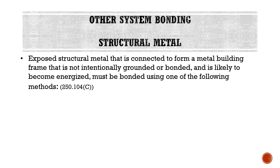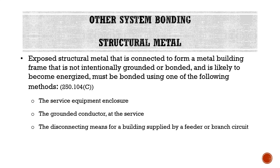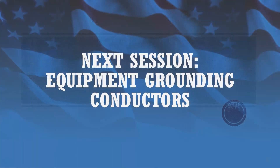Regarding structural metal: exposed structural metal connected to form a metal building frame that is not intentionally grounded or bonded and is likely to become energized must be bonded. We can use structural steel as a grounding electrode, but if for whatever reason we don't, we still have to bond it. Bonding methods include: the service equipment enclosure, the grounded conductor at the service, the disconnecting means for a building supplied by a feeder or branch circuit, the grounding electrode conductor, or a grounding electrode. That concludes this lecture. In our next session, we'll be talking about equipment grounding conductors, which will conclude the lectures for Module 2.